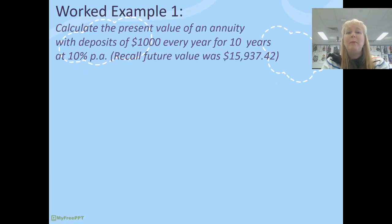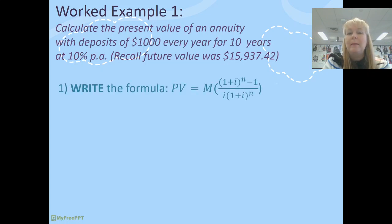Let's do this with a worked example. Now, if you recall a moment ago, I gave an example of $1,000 invested every year for 10 years at 10%. We found that the future value using the future value formula was about $16,000. So let's find out how much we'd have to invest for this same thing as a lump sum. So starting by writing the formula.